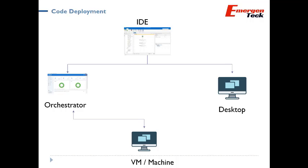If the code is published on Orchestrator, the next step is to take the code, take the binary, and deploy the bot on a virtual machine or any desktop. The IDE is used for development, the code is published into Orchestrator, and finally Orchestrator deploys it on different virtual machines or desktops where the bot runs and executes — all monitored and controlled by the Orchestrator.